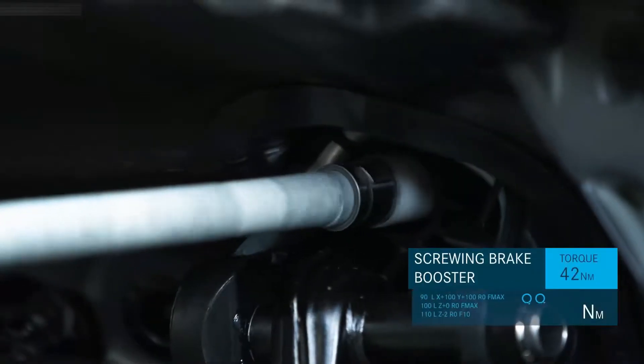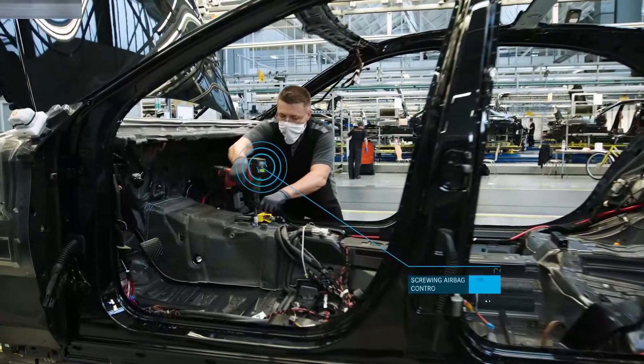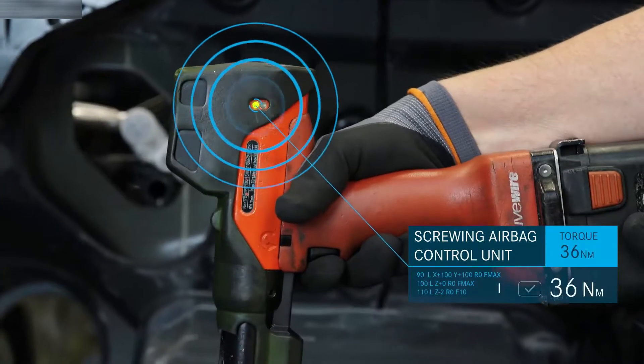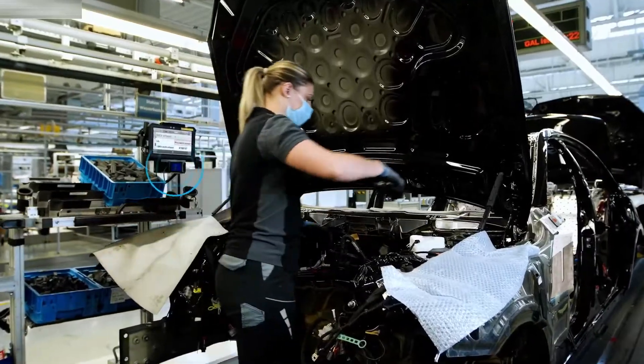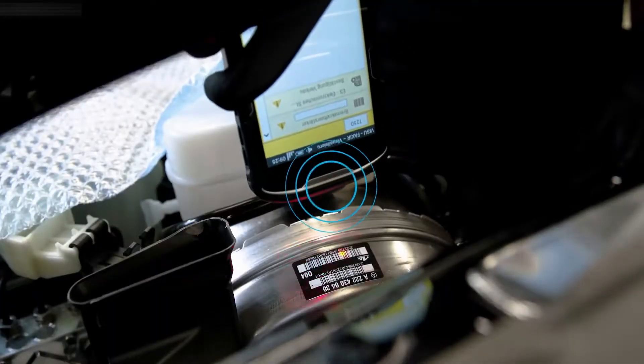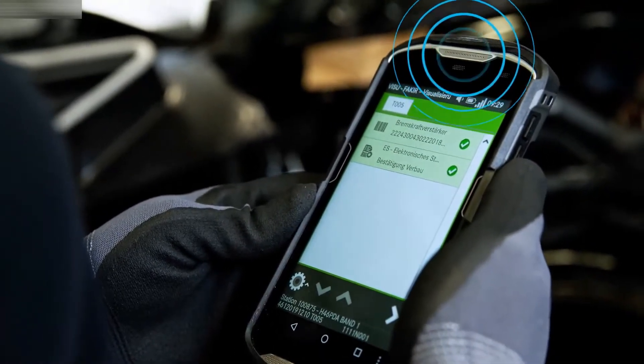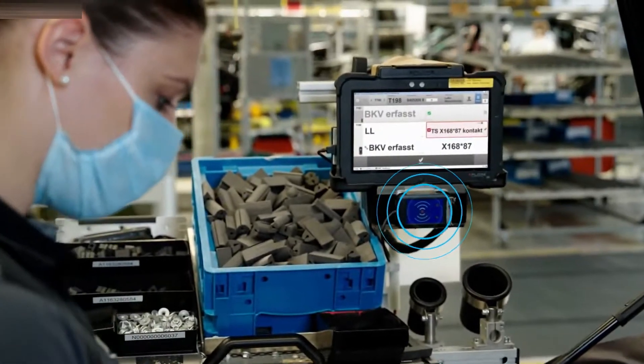Internet of Things tools are integrated into the factory's local network, and they perform the checks whether all work steps have been fully and correctly completed. The workers confirm their activities digitally as well. This ensures greater efficiency and higher quality.